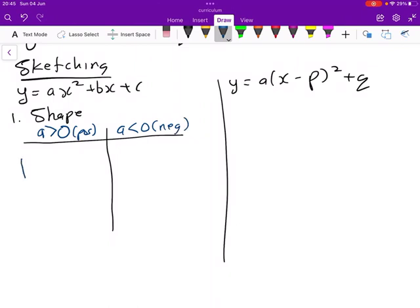So if a is positive, we expect a smiling face. If a is negative, we expect a frowning face.